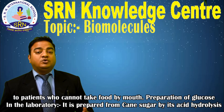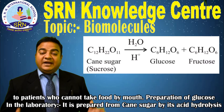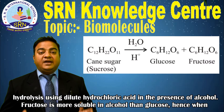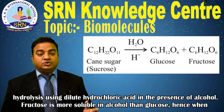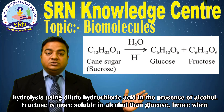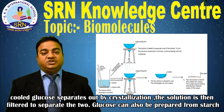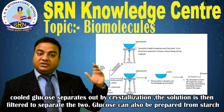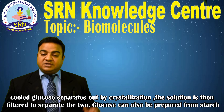Preparation of glucose in the lab: it is prepared from cane sugar by acid hydrolysis using dilute hydrochloric acid in the presence of alcohol. Fructose is more soluble in alcohol than glucose; hence, when cooled, glucose separates out by crystallization. The solution is then filtered to separate the two.